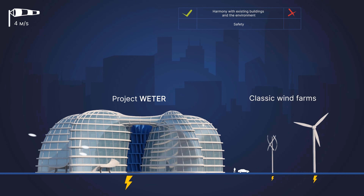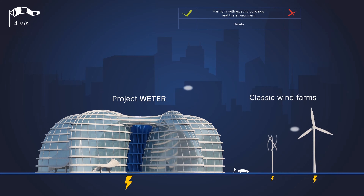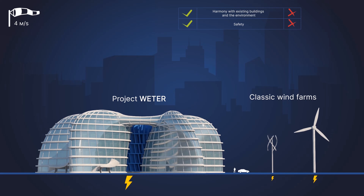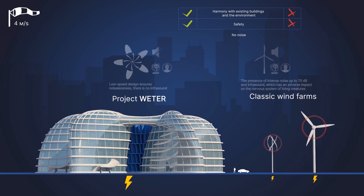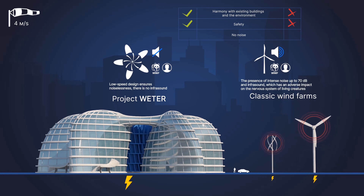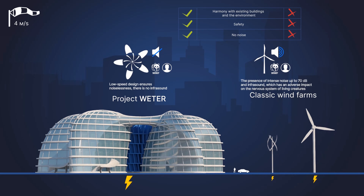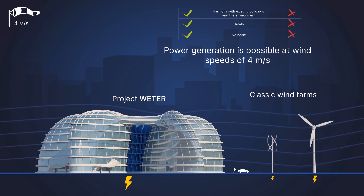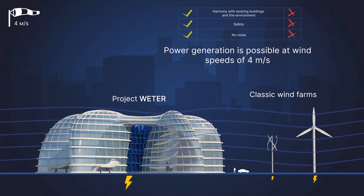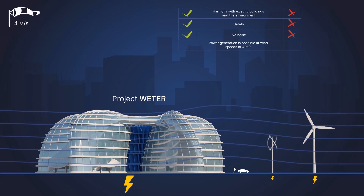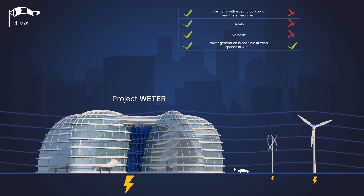Safety. No noise — the low speed design ensures noiselessness and there is no infrasound. By comparison, classic wind farms produce intense noise up to 70 dB and infrasound, which has an adverse impact on the nervous system of living creatures. Power generation is possible at wind speeds of 4 meters per second.